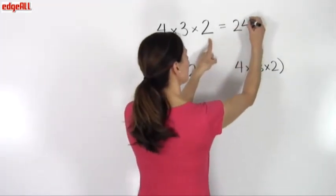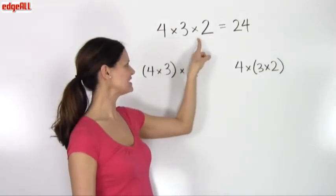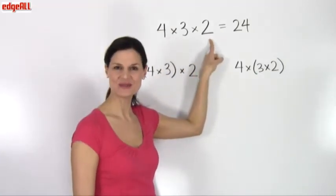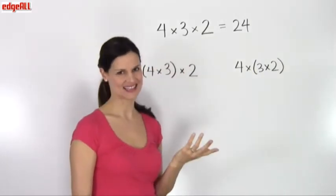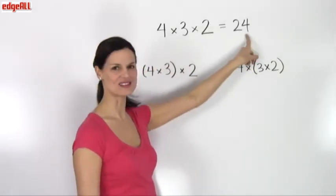Or I could multiply 3 times 2 first, which equals 6, and then times 4. 6 times 4 also equals 24.